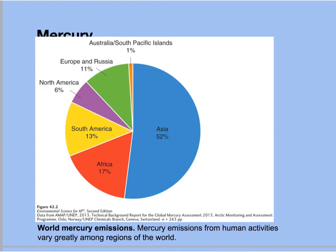Mercury emissions from human activity vary greatly among regions of the world — this data is from 2013. Besides coal burning, other important sources of mercury include the incineration of garbage and hazardous waste, metal and dental supplies, and raw materials used in cement manufacturing. The limestone used to make cement can contain a lot of mercury, which is released during the heating process needed to make cement. Since the heat source is often coal, that releases even more mercury.